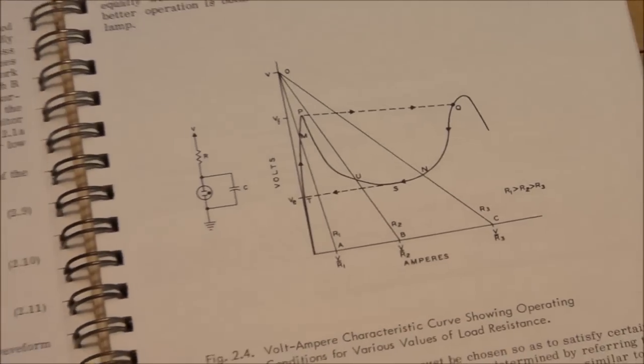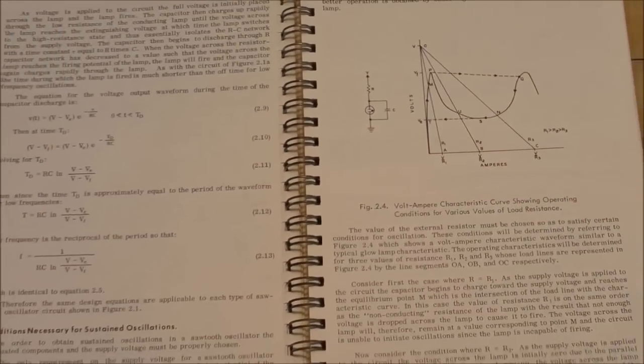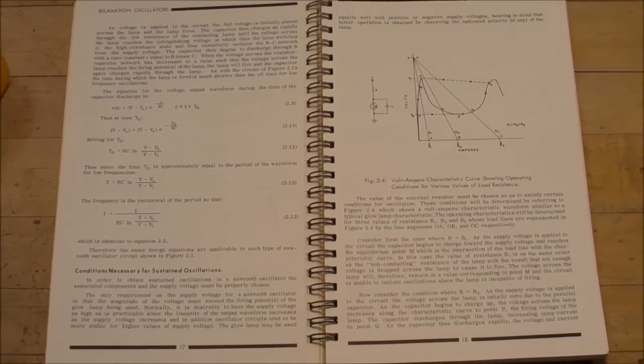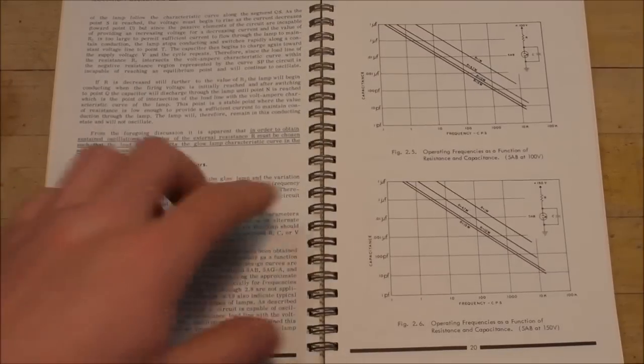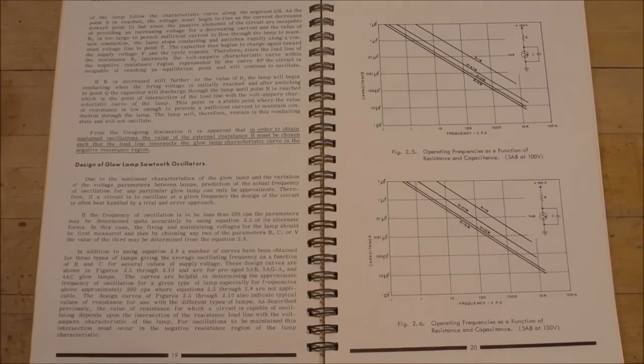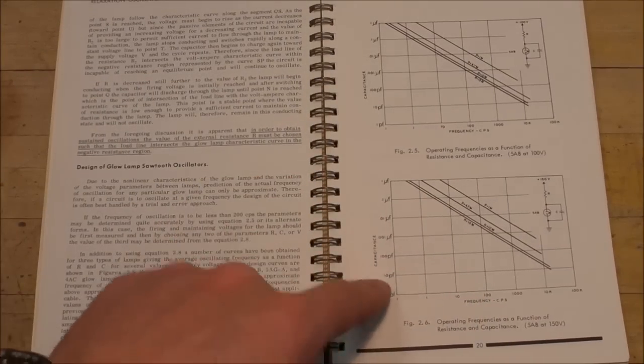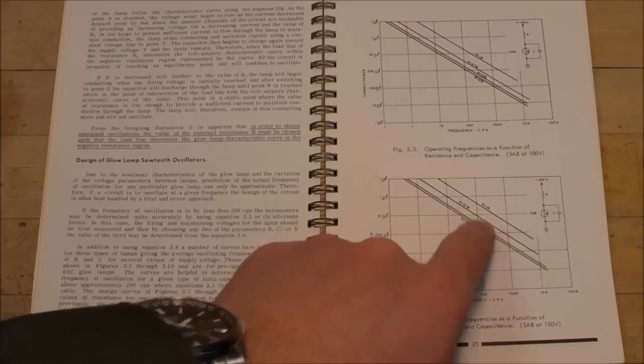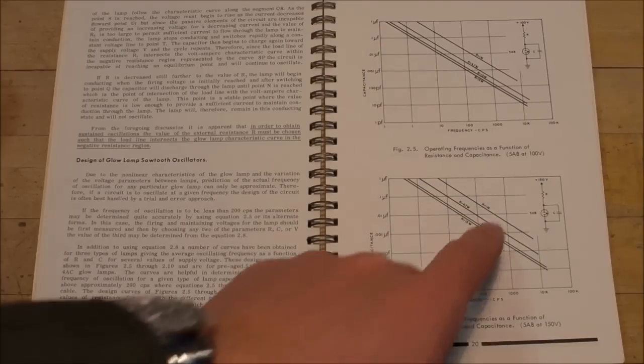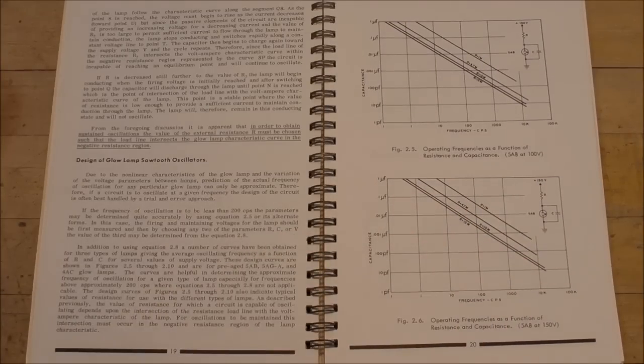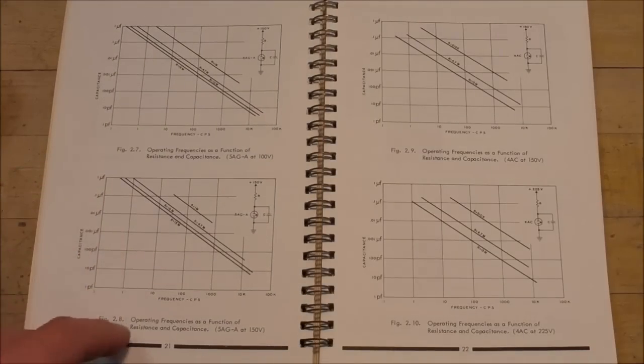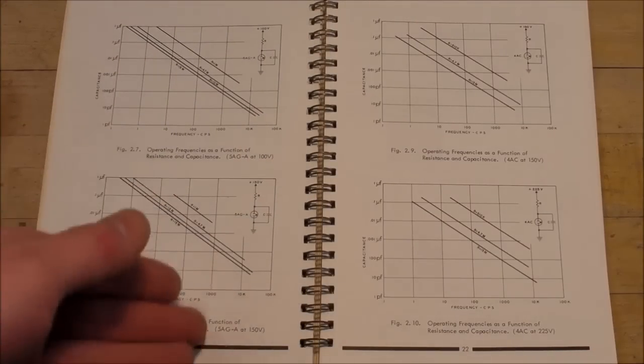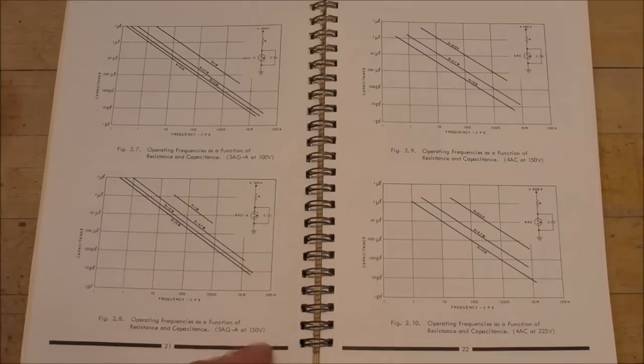Fortunately that's not the only graph in this book to help you design a functioning oscillator circuit. There's also all these guys over here. Got frequency and capacitance, and then each of these lines is for a different resistor anywhere from 1 megohm to 15 megohm. Just got a different chart for each different lamp operating at different volts, 100 volts and 150 volts.